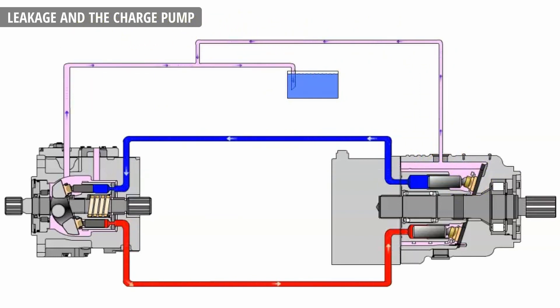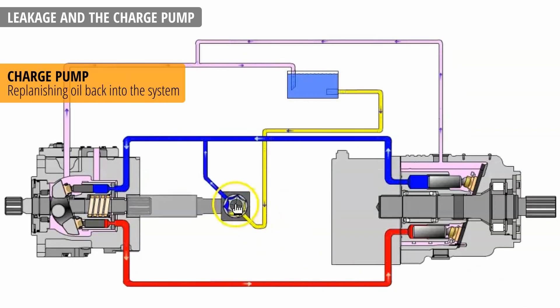To return leaked oil back into the loop, the charge pump is added to the system. It is a fixed displacement pump, tied in on the same shaft to our main pump, sucking the oil from the tank and pushing it back into the system.